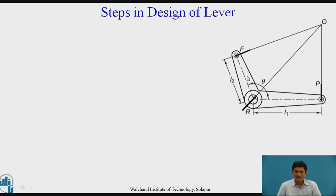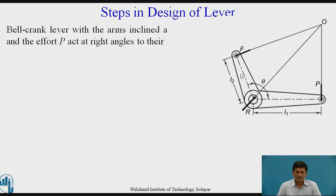For this bell crank lever, the arms are inclined at an angle θ. The force F and P act at right angles to the arm line. This is the arm line or the arm. Force F is perpendicular to it. This is the other arm and effort P is perpendicular to it. Then L1 and L2 are the corresponding arm lengths.